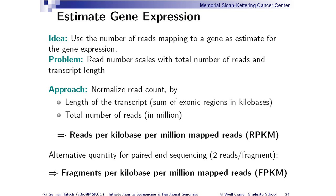A longer gene means you get more reads; if you sequence more reads, you also get more reads. So there's a simple normalization: take the read count, divide by the length of the transcript in kilobases, and divide by the number of reads sequenced in total. This is called FPKM or RPKM — reads per kilobase of transcript per million mapped reads.